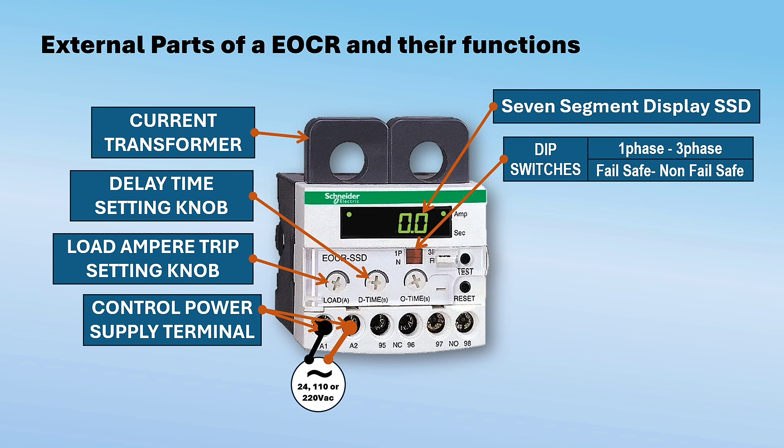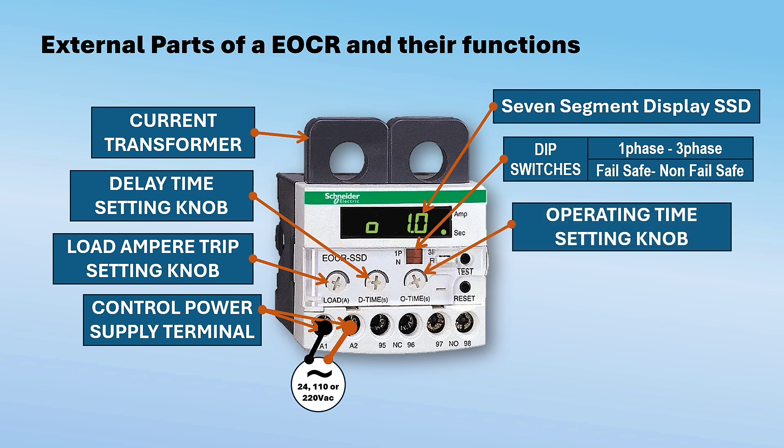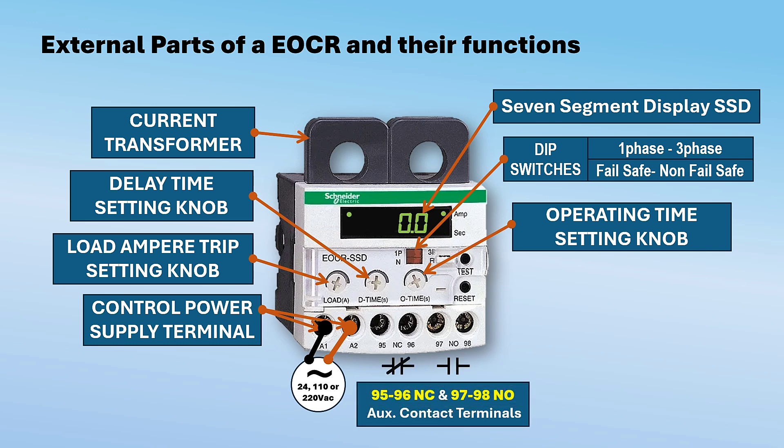O-time or operating time knob — it sets the time in seconds during which the current should be over the ampere setting continuously for the entire operating time period before the EOCR trips. Auxiliary contacts — terminals 95 to 96 are normally closed and 97 to 98 are normally open. These contact statuses change when the EOCR trips.